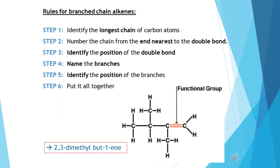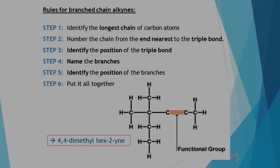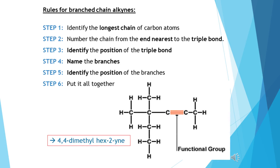Similarly for the alkenes, but this time you must ensure that the carbon-to-carbon double bond has the smallest number possible. The functional group always takes precedence over a branch and must have the smallest number possible. The branches then take their positions based on how you numbered from the double bond. It's exactly the same procedure for your alkynes — the carbon-to-carbon triple bond must have the smallest number possible.